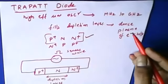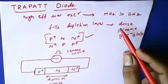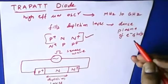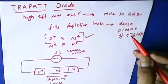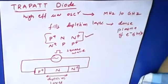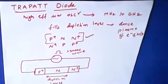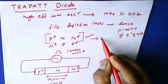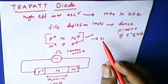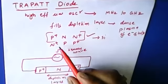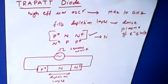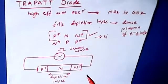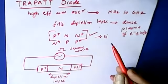The TRAPATT diode has been constructed using silicon material. It is not a compound semiconductor — it is a normal semiconductor made of silicon that is used to fabricate this diode.